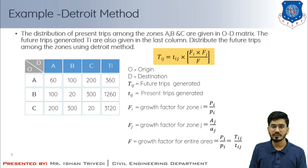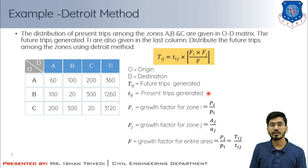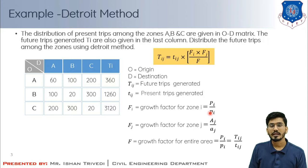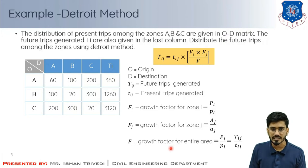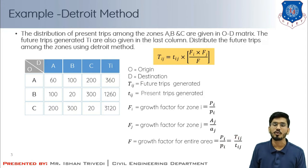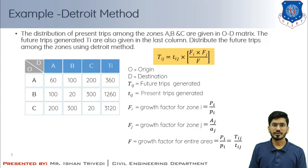The equation is: capital Tij equals small tij times Fi times Fj divided by F. Here small tij represents the present trips generated among interzonal activity. Capital Fi is the growth factor of zone i, calculated as capital Pi divided by small pi. Fj is the growth factor of zone j, calculated as capital Aj divided by small aj. Capital F is the growth factor of the entire study area, equal to capital Pi divided by small pi, or capital Tij divided by small tij — the ratio of total future trips to total present trips.